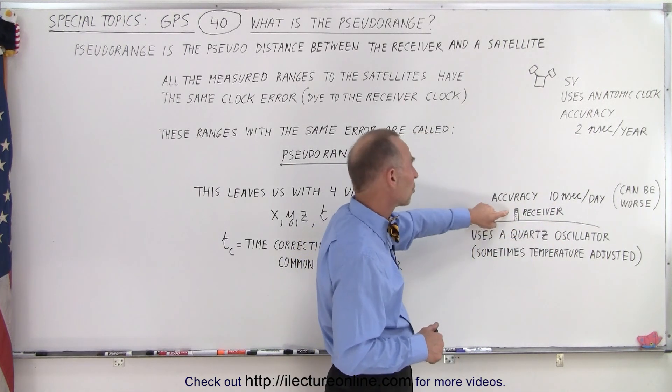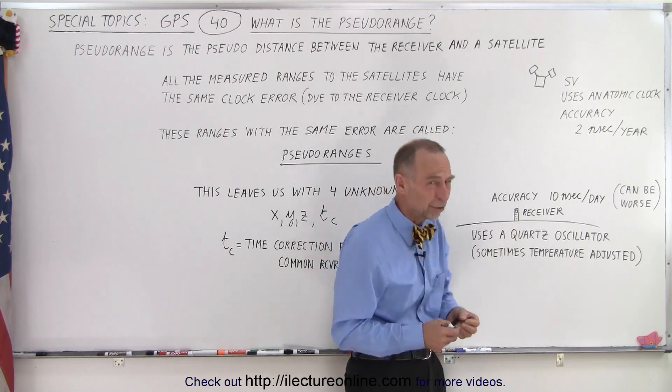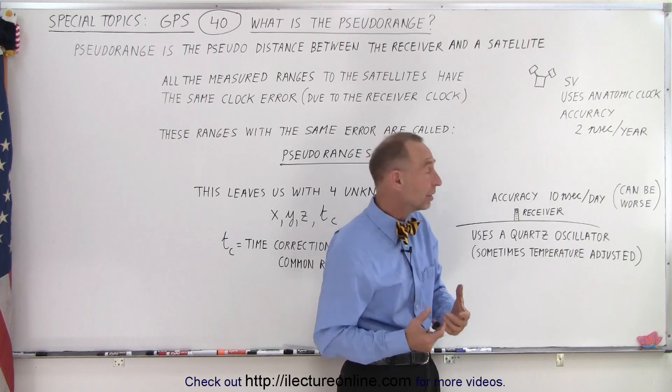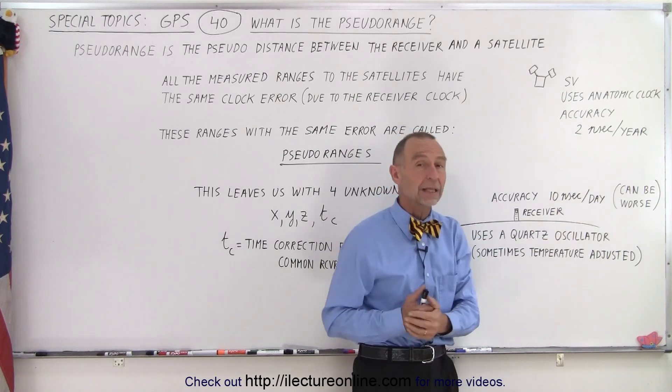As opposed to the receiver which uses what we call a quartz oscillator, which is very cheap. It's not as good and it can be off 10 nanoseconds per day, and sometimes it can be a lot worse.